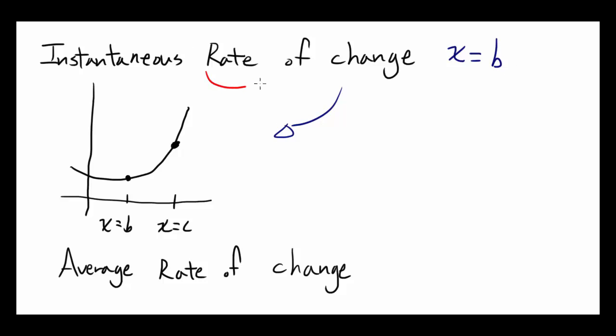the rate of change is the same thing as slope, so they are asking you to find instantaneous slope or the slope exactly at x equals b. And that's going to be the slope of the tangent line at x equals b.